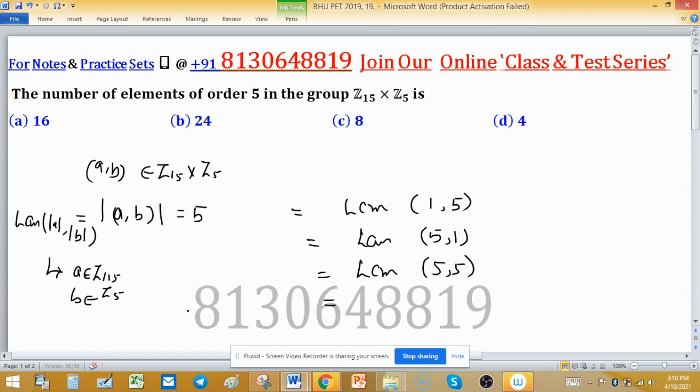We know that the number of elements of order D in Z_n is φ(D) if D divides n. Since 5 divides 15 and 5 divides 5, the count is φ(D). Otherwise 0 if D doesn't divide n.